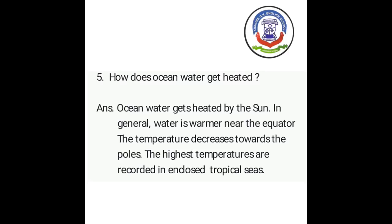Now let us understand question five: how does ocean water get heated? (Samudra ka paani kaise garm hota hai?) The answer is: ocean water gets heated by the sun. (Surya dwara mahasagar ka paani garm hota hai.) In general, water is warmer near the equator. (Samanya taur par, bhoomadhya rekha ke paas paani garm hota hai.) The temperature decreases towards the poles. (Taapman dhruv ki or ghatta jaata hai.)